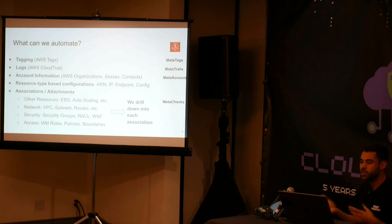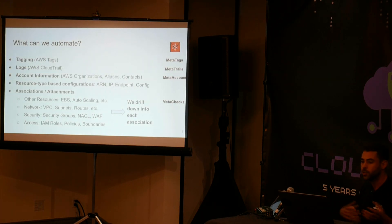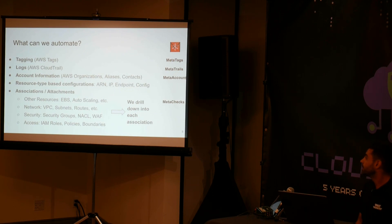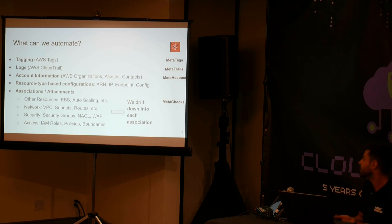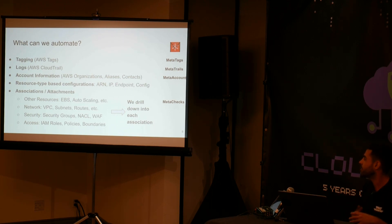What information is available programmatically that we can use to automate this process? Tagging, if used consistently, can provide a lot of information about the affected resource — maybe the service, the owner, the environment, a description, a name. Logs or CloudTrail in AWS could help us understand who created the affected resource, how, when, and from where.